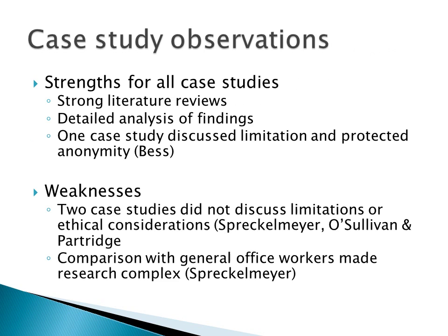We've looked at three case studies that used different approaches to study a gap in the research. The researchers also used different methods to collect data. Spreckelmeyer used one study but compared findings to a national survey. O'Sullivan and Partridge used one case study, while Best used a case study to compare two organizations. In my opinion, all three articles had a strong literature review and strong conclusions. However, Best was the only researcher to discuss study limitations, and she also protected privacy by giving employees and organizations anonymity. Spreckelmeyer and O'Sullivan and Partridge could have discussed limitations in their respective studies. I also wonder if Spreckelmeyer's additional comparison to general office workers made the research too complex. Overall, I felt all three articles filled in the research gaps regarding organizational change.